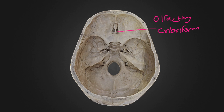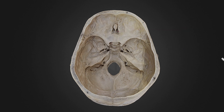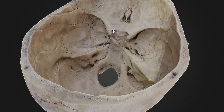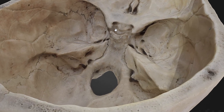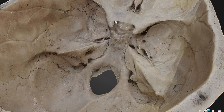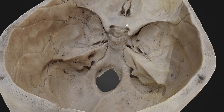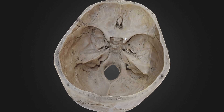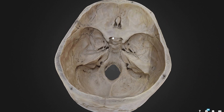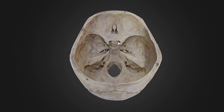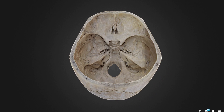The second cranial nerve is the optic nerve. It passes through the optic canal. This margin here is referred to as the lesser wing of the sphenoid bone, and inner to it we can see this opening — this is the optic canal. The second cranial nerve passes through the optic canal, along with one artery called the ophthalmic artery.